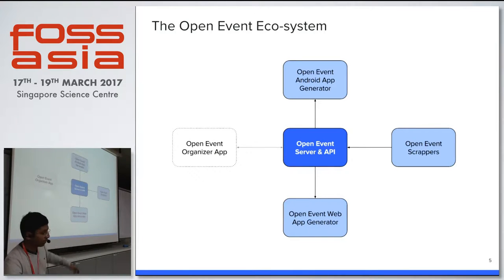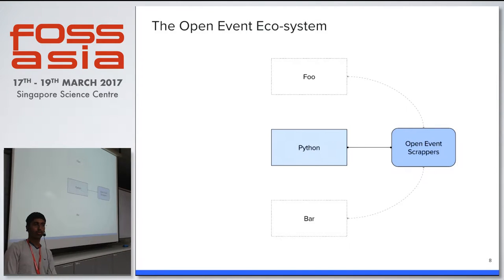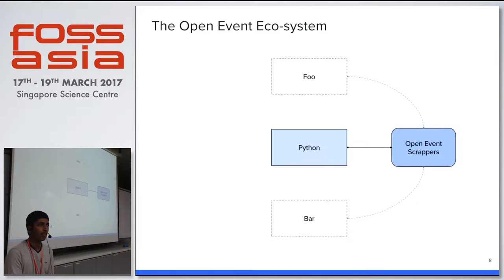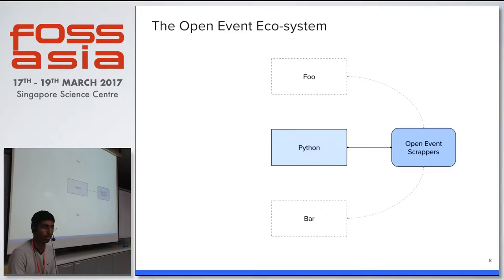Next we'll move on to the web app generator. The setup is pretty simple — we have Node.js and Express.js as a web framework, which handles everything. Next we have Open Event Scrapers, which are used to get data from other event websites. For example, if you have an event on Eventbrite and you want to move it to the Open Event project, instead of manually getting all the data from Eventbrite and typing it into Open Event, you can use the Open Event Scraper to automatically scrape the Eventbrite page and put it in a format you can quickly import into the Open Event server. Right now we support only Eventbrite and it uses Python, but in future we may have other modules for different services.